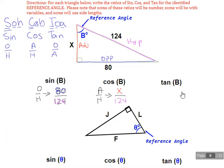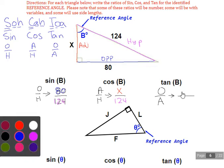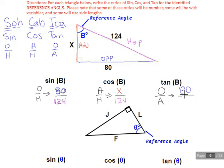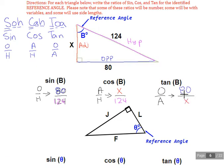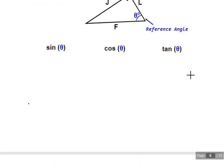Tangent is O over A, opposite over adjacent. So the opposite side to angle B in this case is going to be 80, and our adjacent side is going to be X. So sine of angle B is 80 over 124, cosine is X over 124, and tangent is 80 over X.